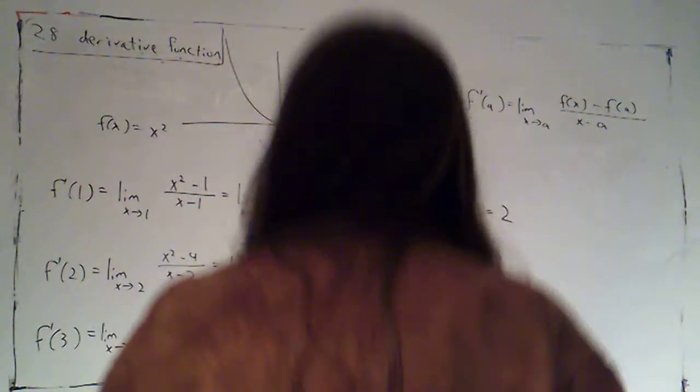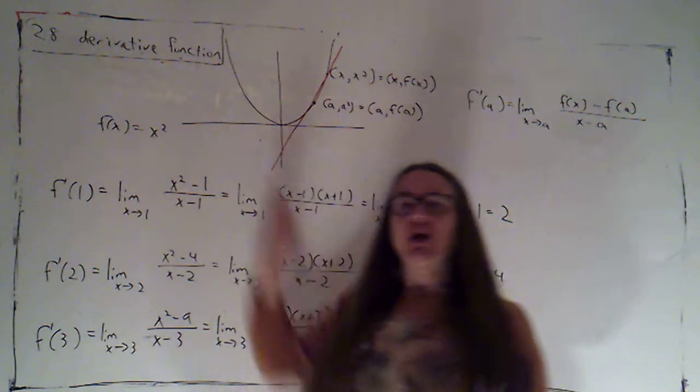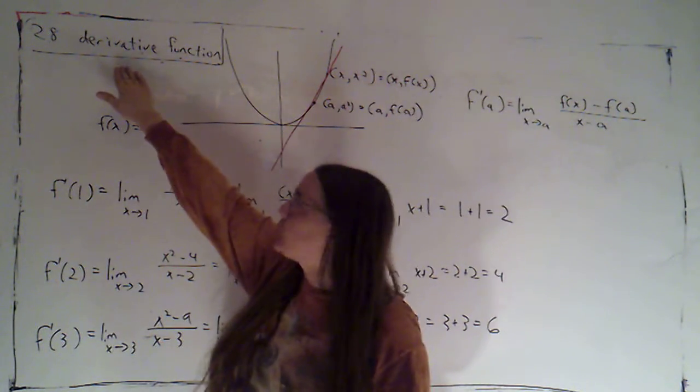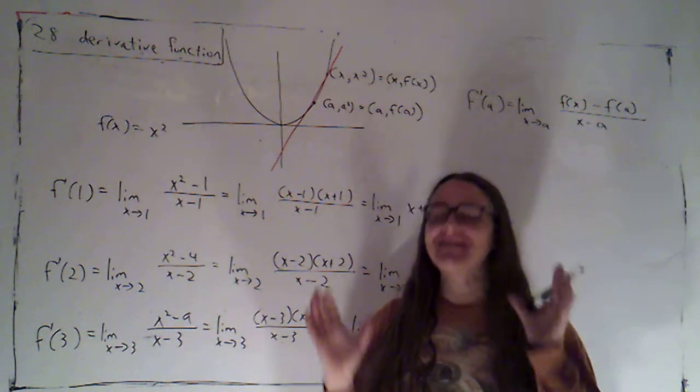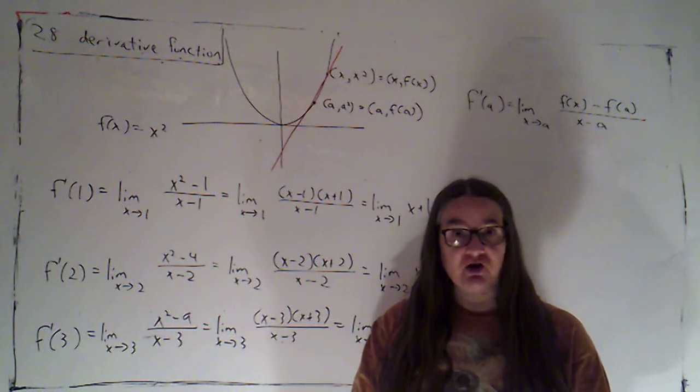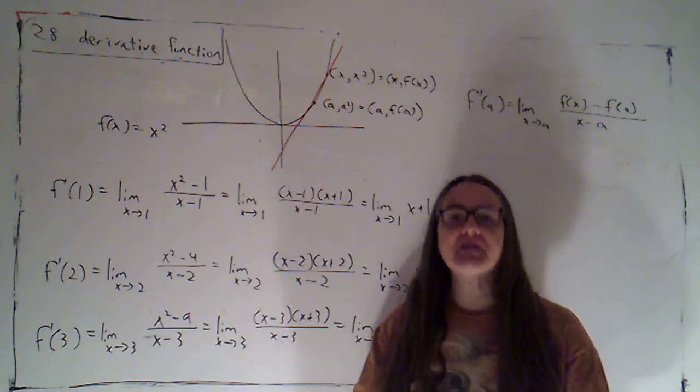Section 2.8 is about the derivative function. So far we've just talked about the derivative, which is the slope of the tangent line, which is the instantaneous rate of change of a function at a particular point.